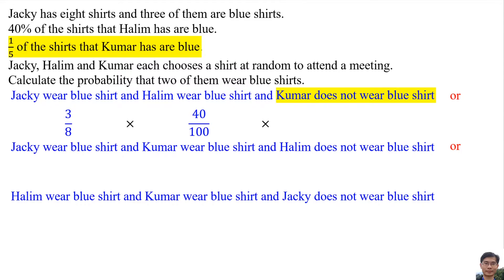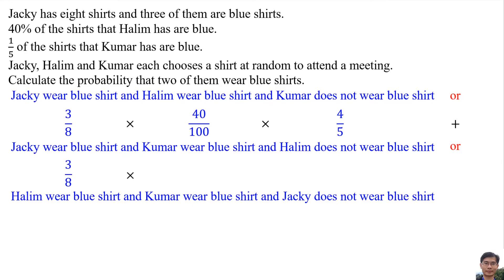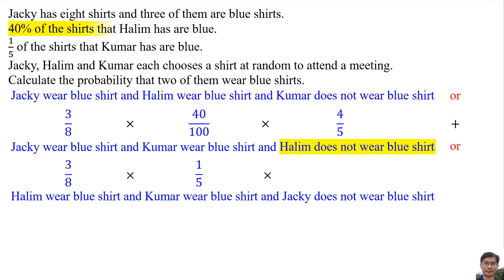The probability of Kuma wearing a blue shirt is 1 over 5. The probability of Halim NOT wearing a blue shirt is 60 over 100, because 40% of Halim's shirts are blue, so the remaining 60% are not blue. 'Or' means plus.